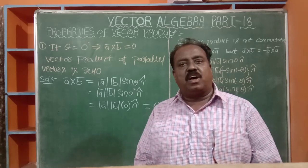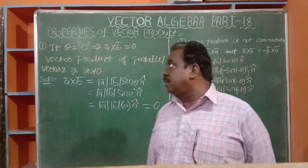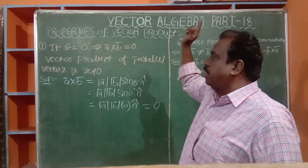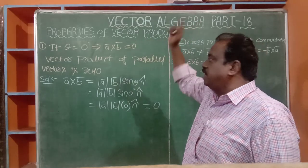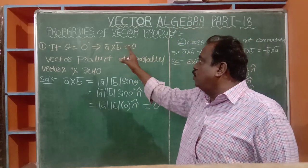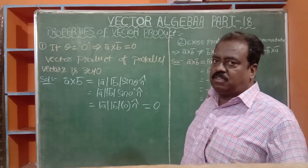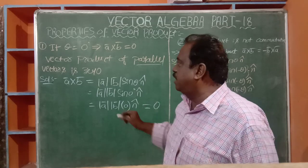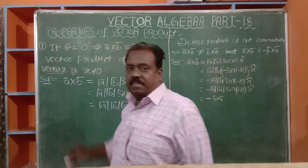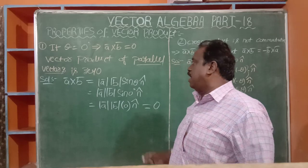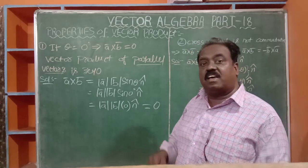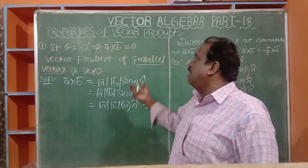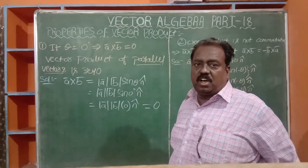Now some properties of the vector product, or cross product, are there. Property number one: if θ = 0 degrees, that means the vectors are parallel vectors, or collinear vectors, or like vectors, or unlike vectors — all are the same. They have an angle of zero degrees.